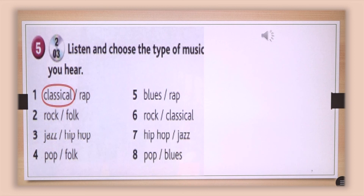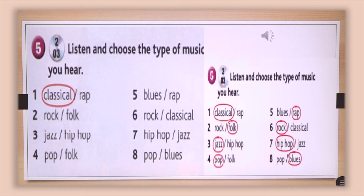Okay, those were the types of music, and probably you circled the right one. Let's check: the second type of music is folk, the third jazz, the fourth pop, the fifth rap, the sixth rock, the seventh hip hop, and the eighth blues.